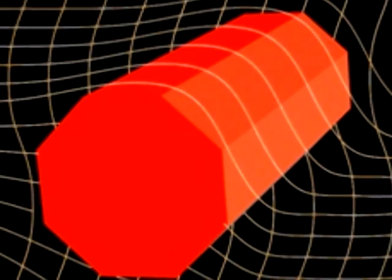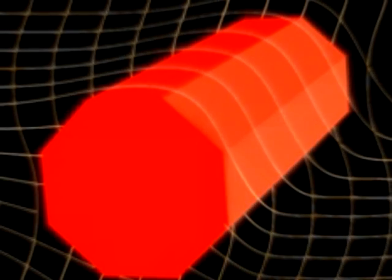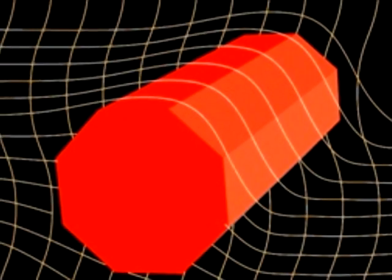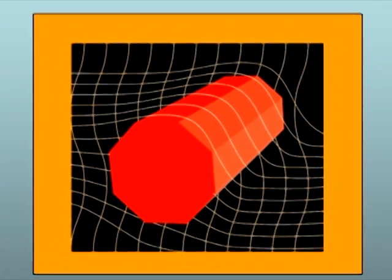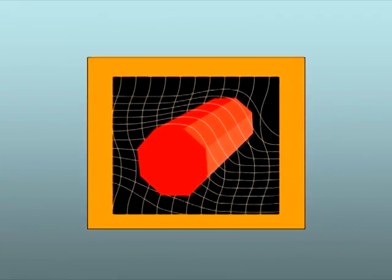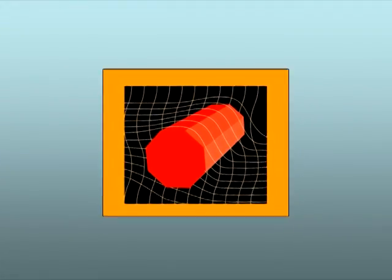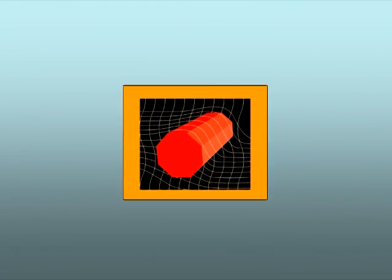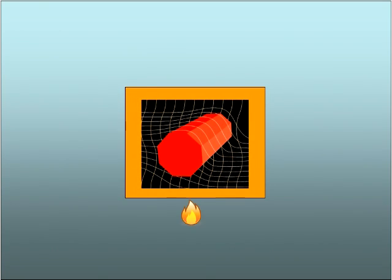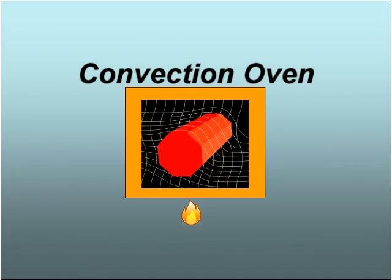Some ovens heat parts or materials by surrounding them with hot air. An oven with a temperature of 600 degrees Fahrenheit, for example, has 600-degree air that is circulated around the parts to be heated by convection. The air needs to be heated first, which then transfers the heat to the material being processed.